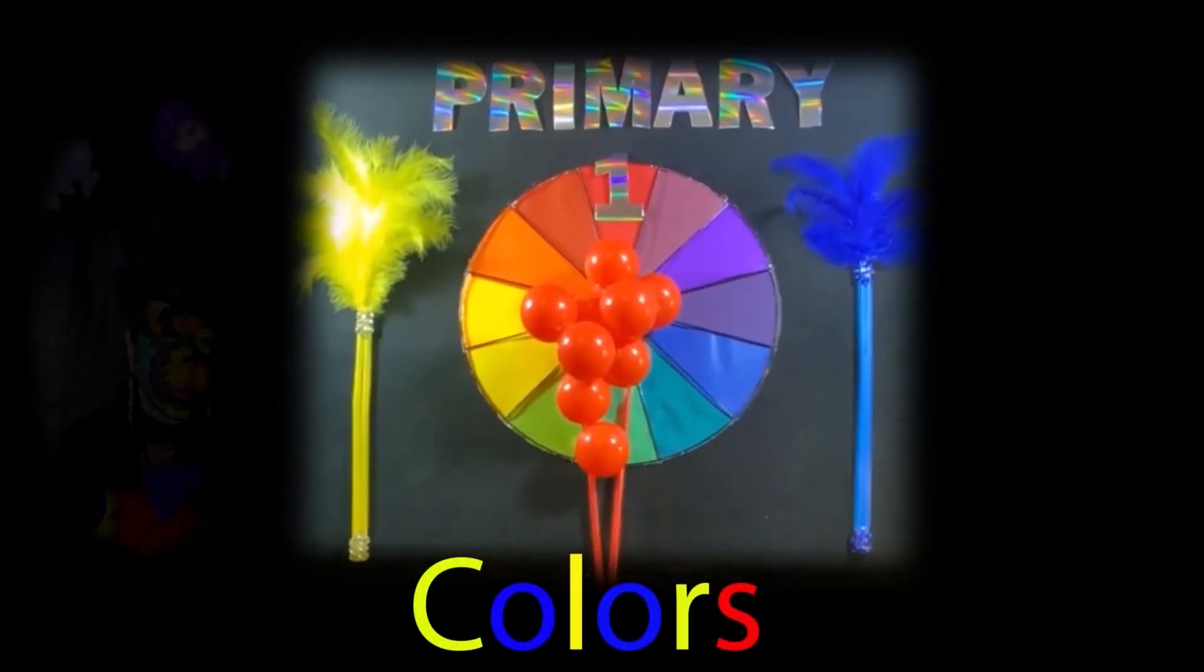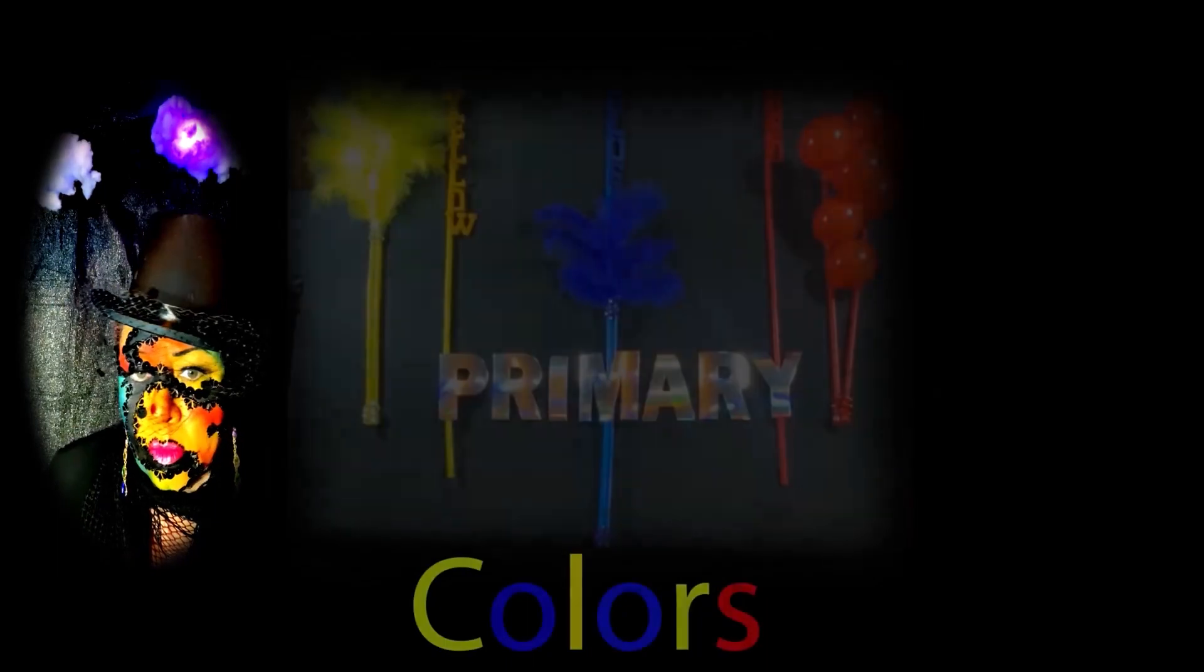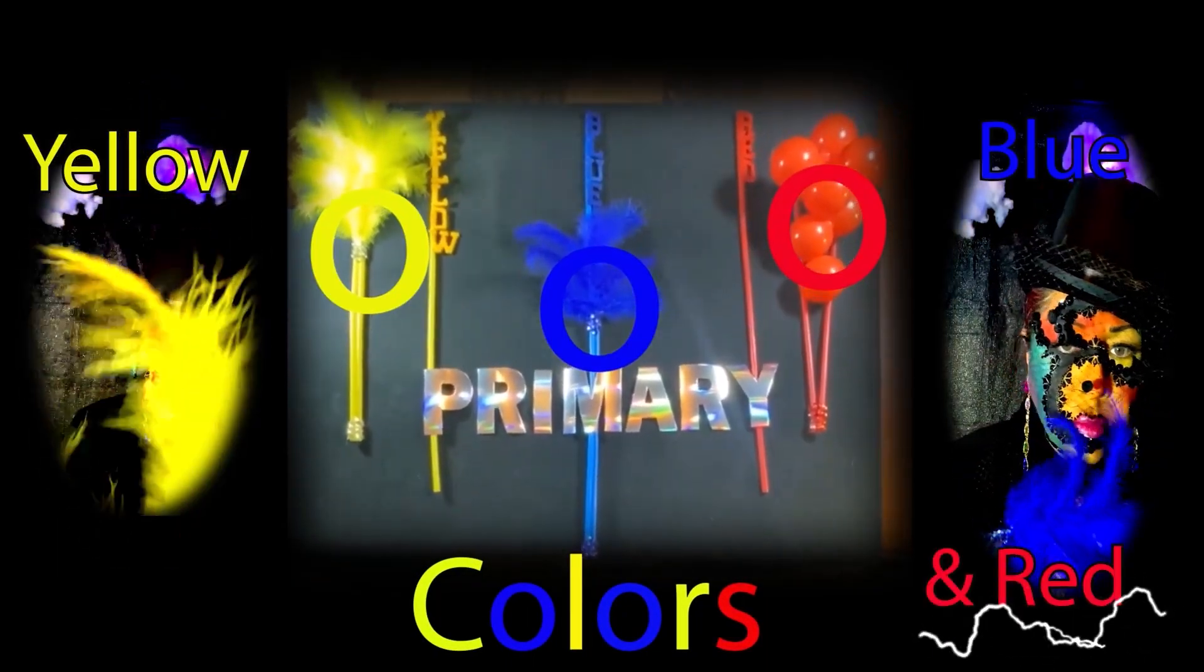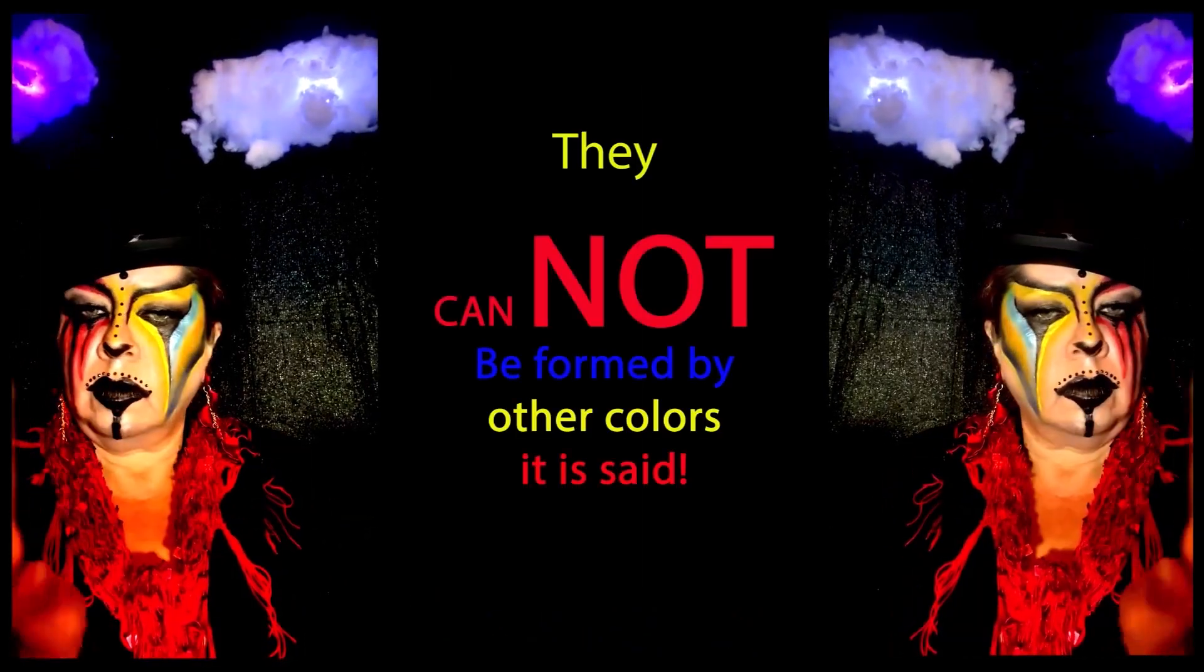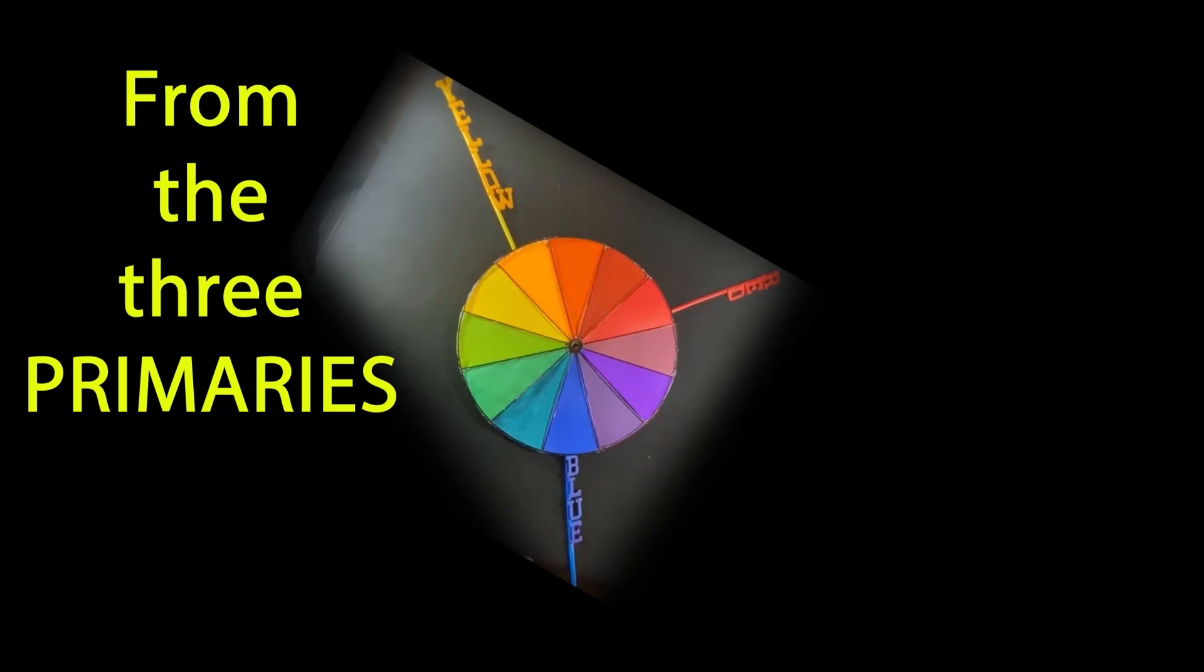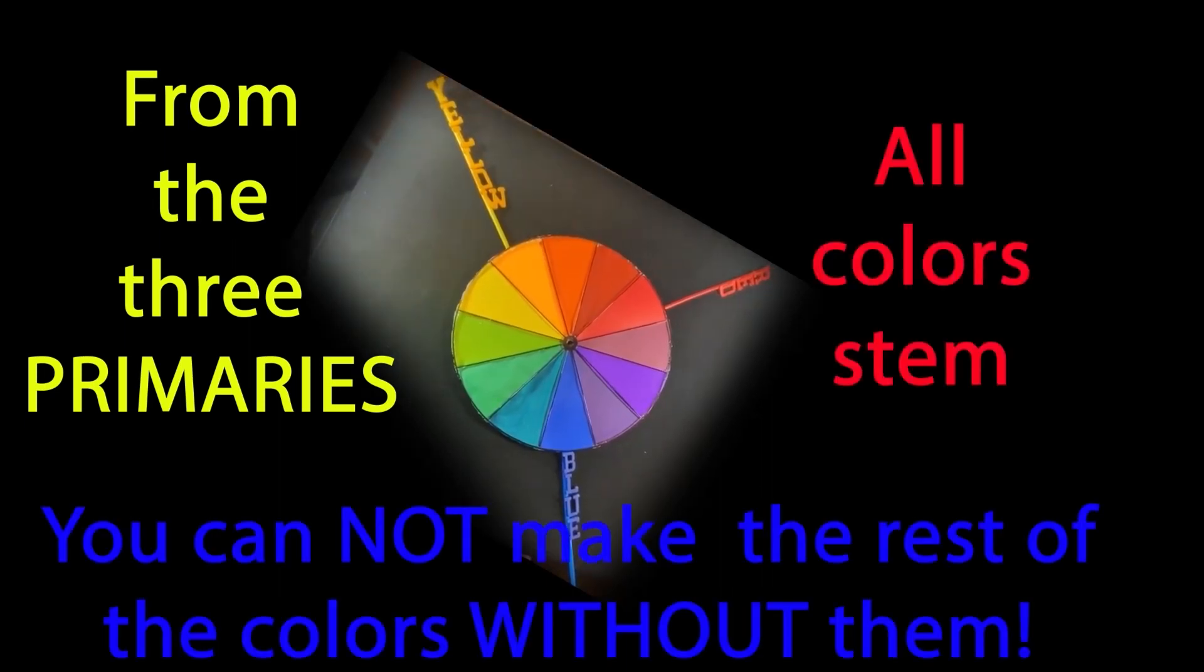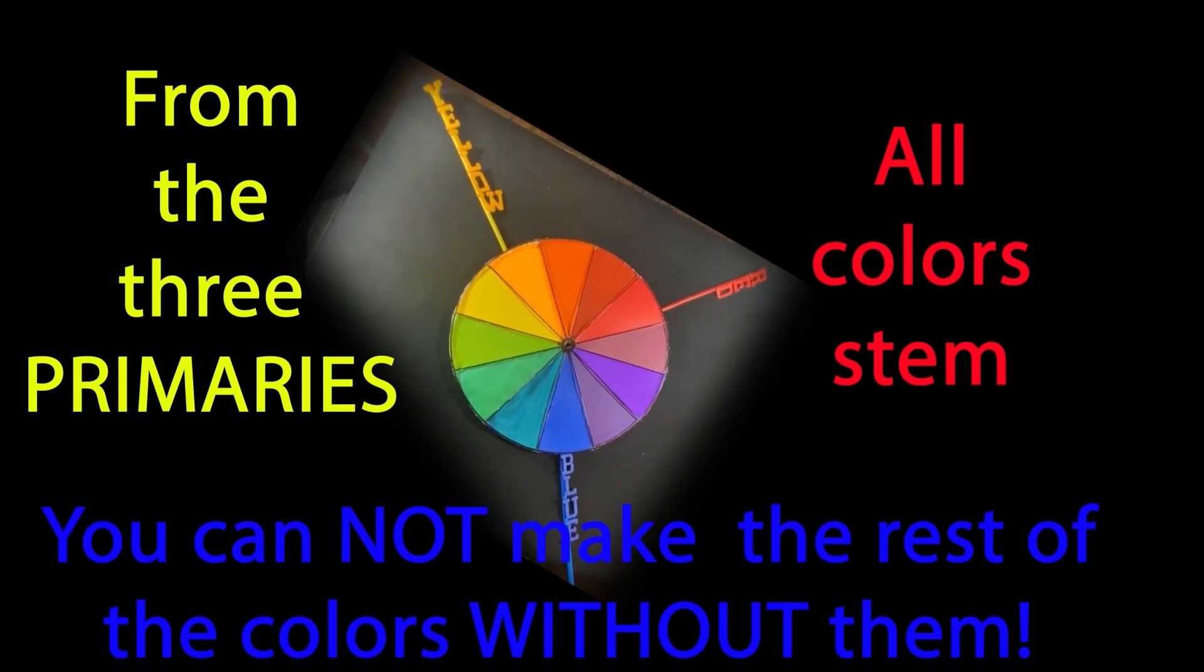Primary colors. Primary colors are yellow, blue, and red. They cannot be formed by other colors, it is said. From the three primaries, all colors stem. You cannot make the rest of the colors without them.